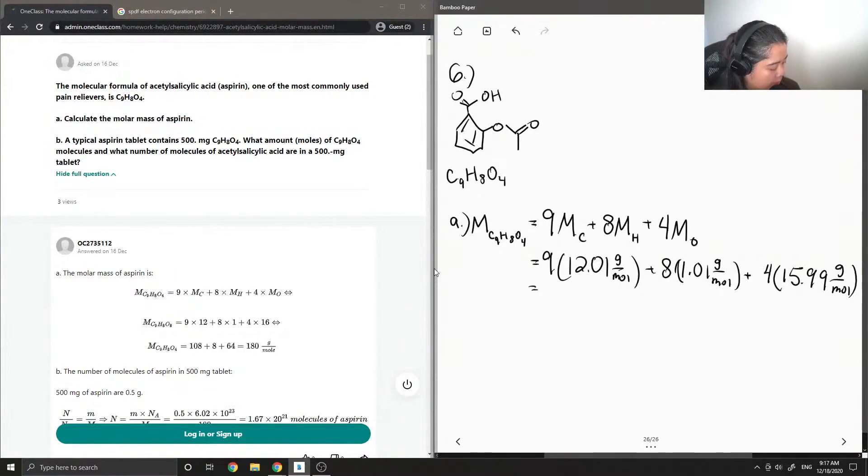Okay, so if we sum up all the values, you end up getting 180.16 grams per mole for the molar mass of aspirin.